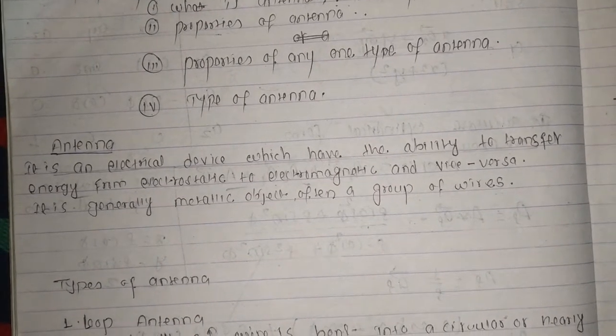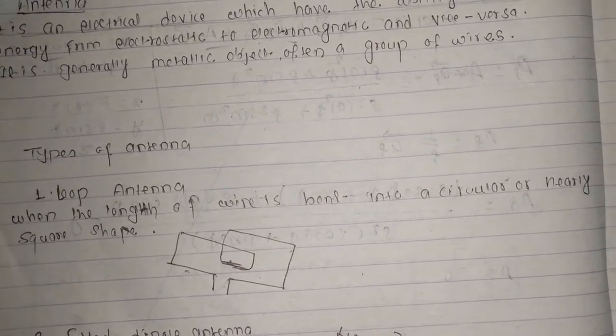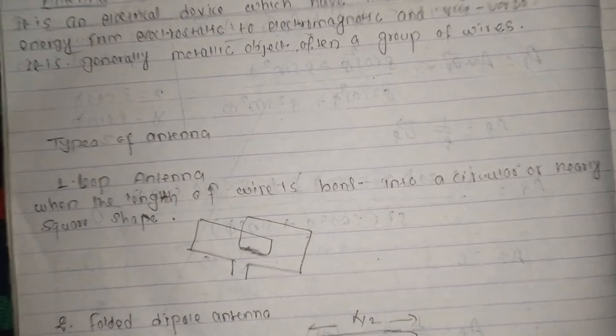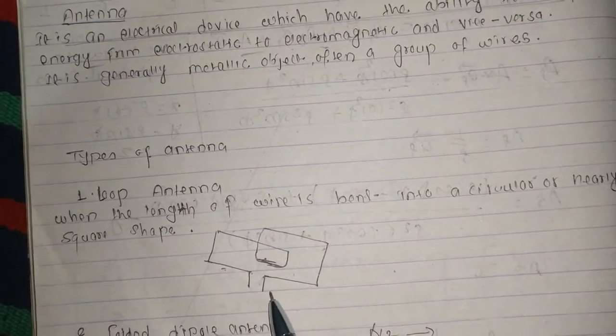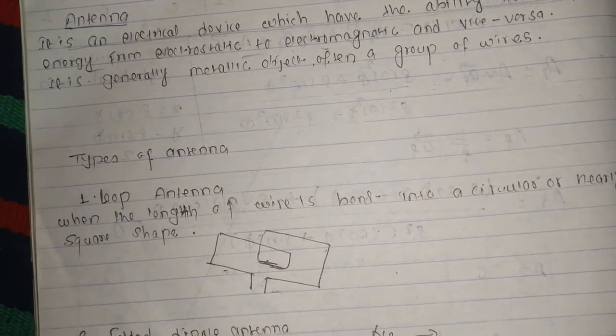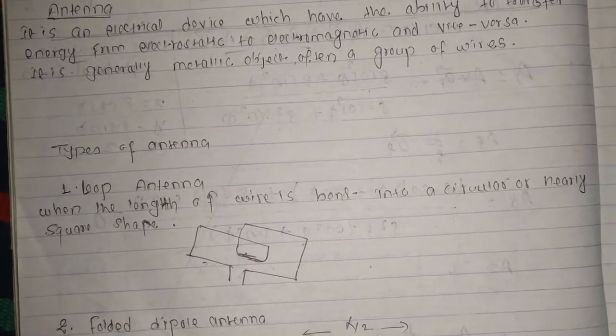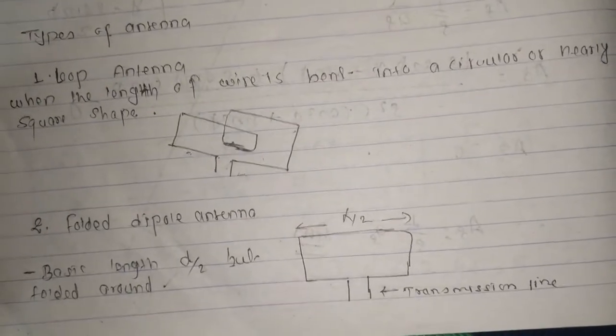Next one is types of antenna. There are various types of antenna, but a few of them are loop antenna. Loop antenna means when the length of wire is bent in a circular or nearly circular shape, or nearly square. Second one is folded dipole antenna.